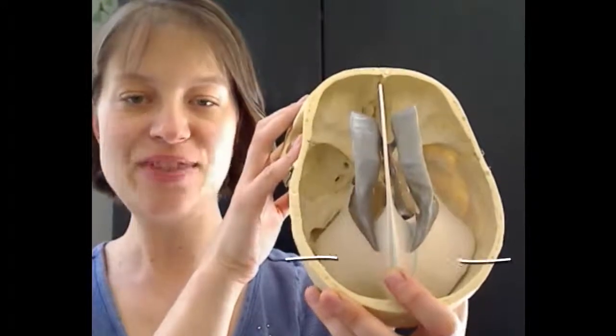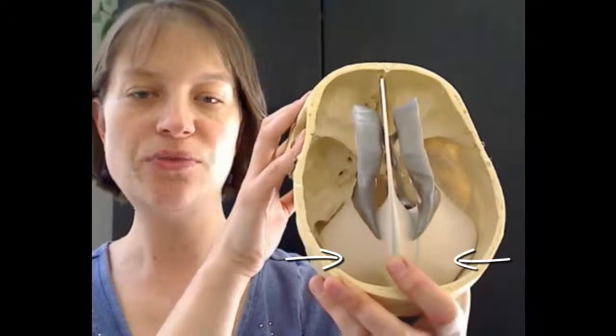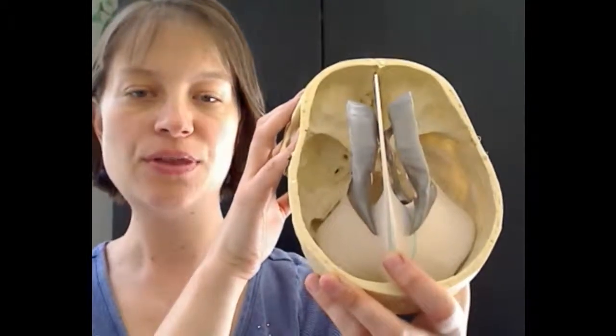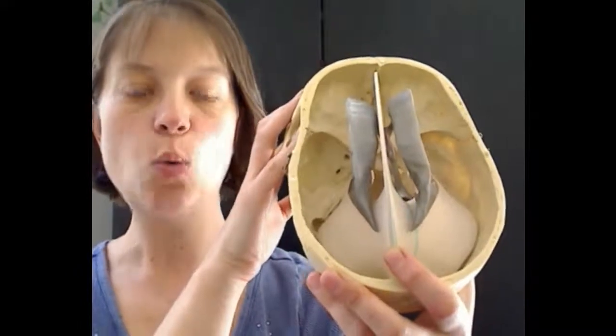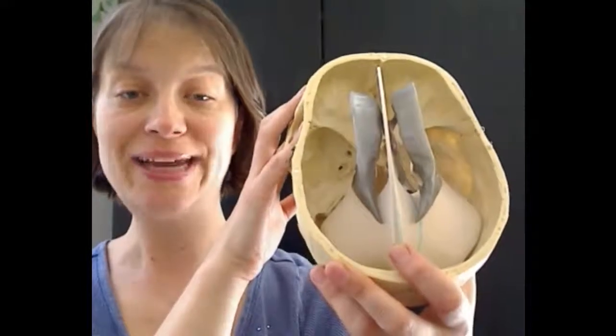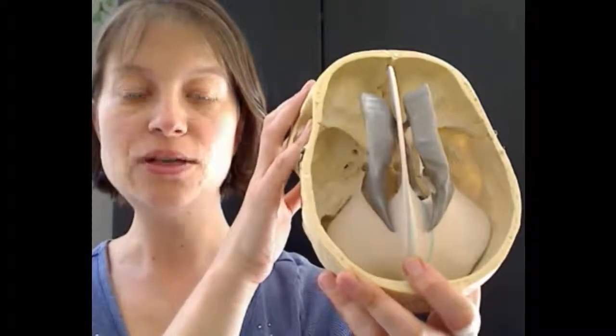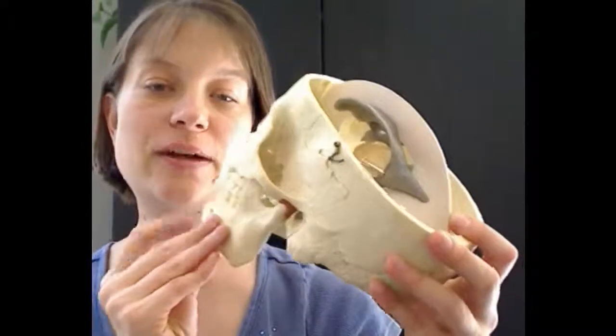And then we have the tent running horizontally, dividing the occipital lobe of the brain from the cerebellum, left and right cerebellum. We also have the falx cerebelli, which you can't see in this view. But the falx cerebelli divides the left and right hemispheres of the cerebellum.